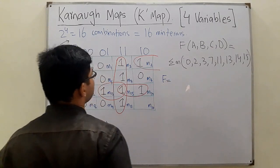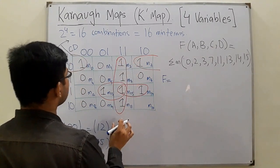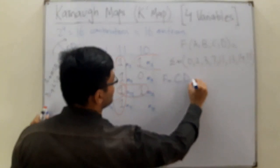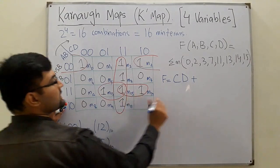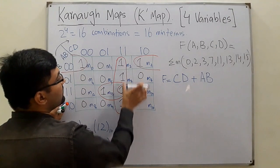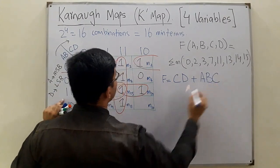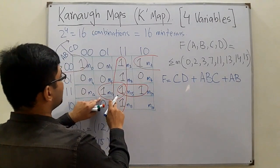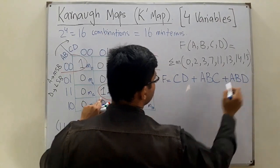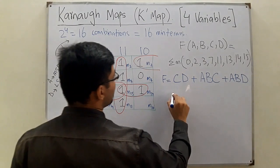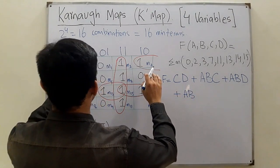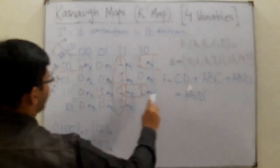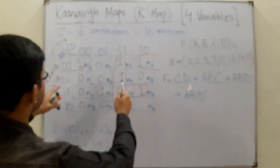Now we write the function. The first vertical group: A and B are changing, so what's not changing is C and D, both in high form, giving CD. The second group: A and B are not changing, giving AB, and C is not changing, so we get ABC. The third group: A and B not changing, D is also not changing, giving ABD. The fourth group: A complement and B complement are not changing, D complement is not changing, giving A'B'D'.